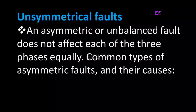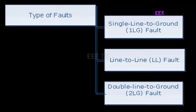An unsymmetrical fault is where the fault current is not the same in all phases and the phase displacement is not equal. Now, what types of fault are there? The types are: single line to ground fault, line to line fault, and double line to ground fault.